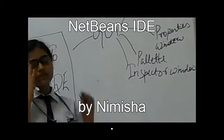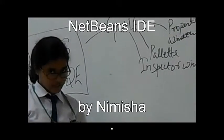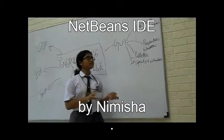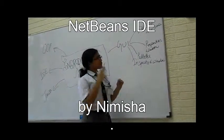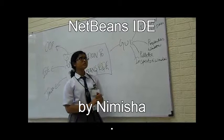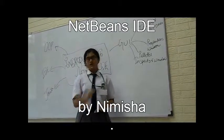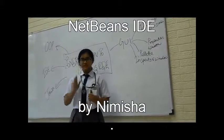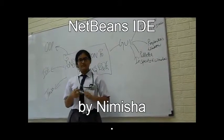The design window is the place where we design the application and put all the components. The properties window shows the property of the component we have selected. The parent window has all the lists of customizable components — it includes the JFC components, string components, and Java components. The inspector window shows all the components in our application, both visible and non-visible, in a hierarchical form.